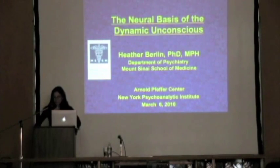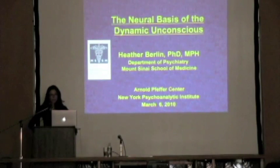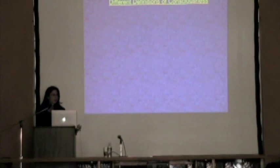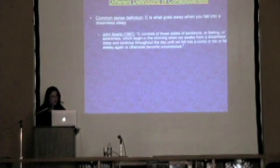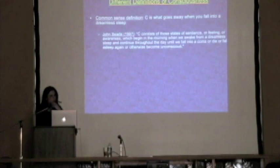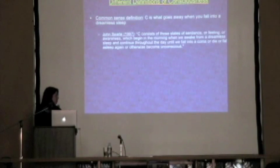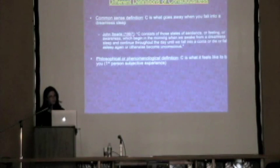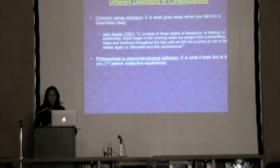Thank you very much for having me. Before I talk about the neural basis of the dynamic unconscious, I think it's important to first define what we mean by consciousness and how we separate the two. In terms of definitions of consciousness, it's actually quite vague. One is a common sense definition — it's what goes away when you fall into a deep, dreamless sleep. This was John Searle's definition. Another is a phenomenological definition: consciousness is what it feels like to be you, this first-person subjective experience.